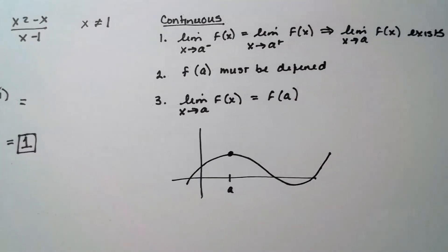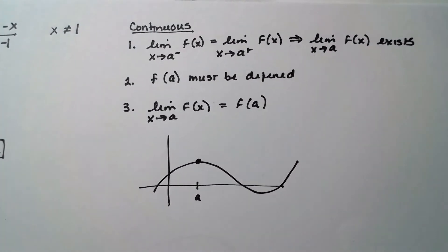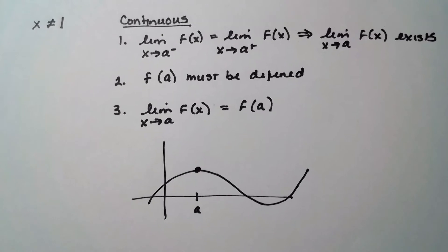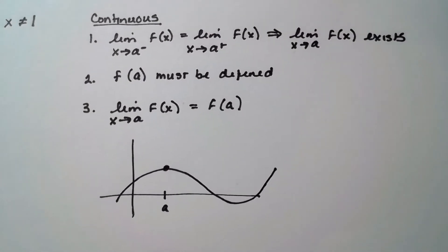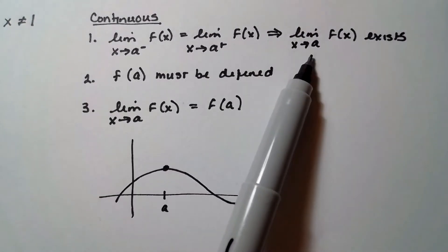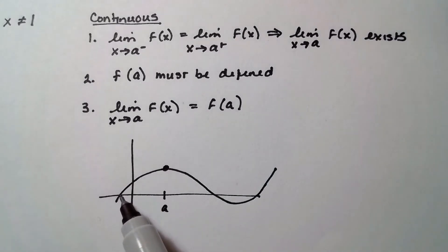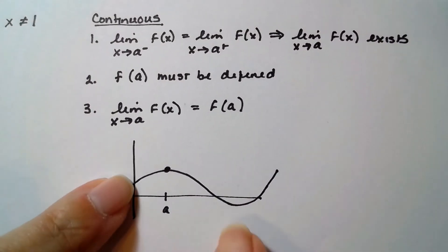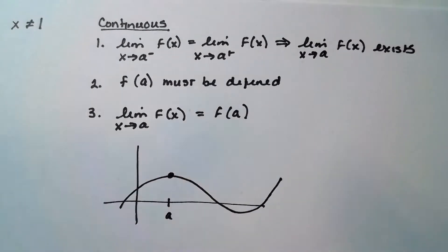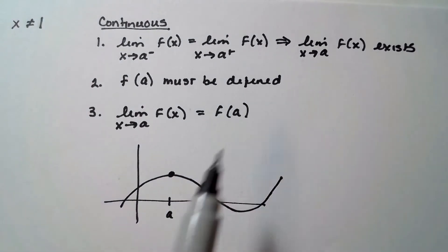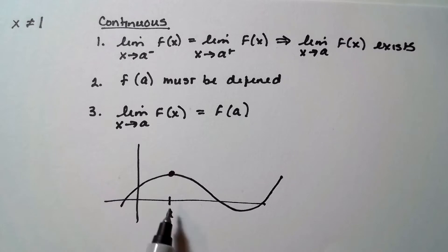So I wanted to remind you, because this is super important, of the definition of what a continuous function is, continuity. Number one, the limit has to exist at some point. So remember we had graphs, and we'd say the limit from the left has to equal the limit to the right, and if they're the same value, then the limit exists. So in this case here, at this point A, the limit does exist because they're going to the same height.